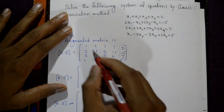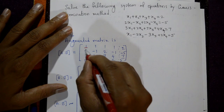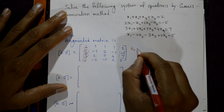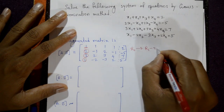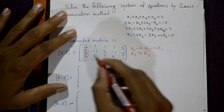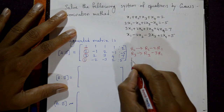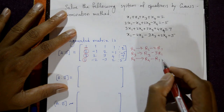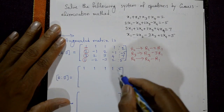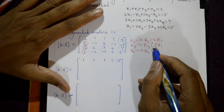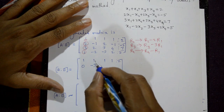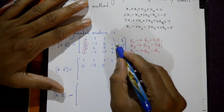The leading number is 1, and we need to make the elements below it (2, 3, 1) equal to 0 in rows R2, R3, R4. So: R2 = R2 minus 2·R1, R3 = R3 minus 3·R1, and R4 = R4 minus R1. The first row remains as it is. For R2 = R2 minus 2·R1: 0, -3, 0, -3.